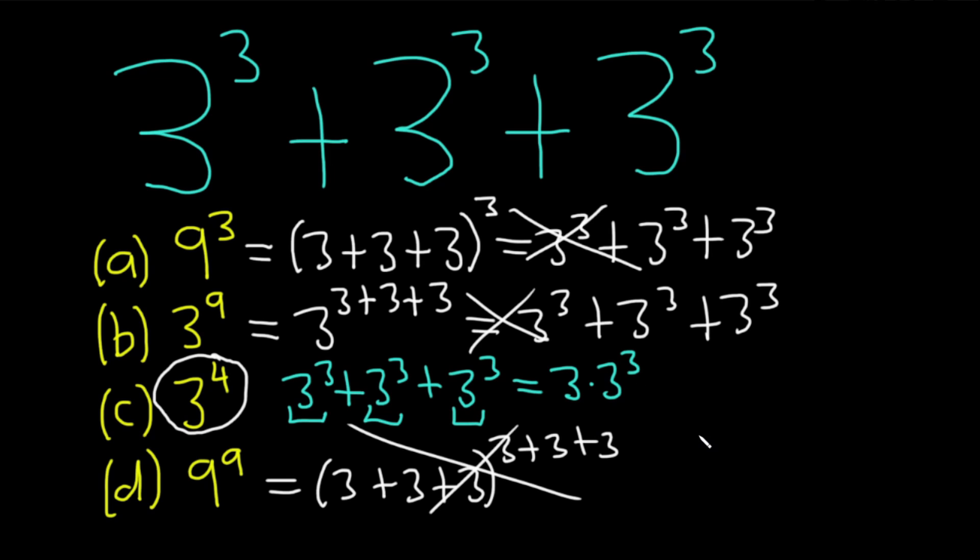And if that doesn't make sense, just think about it as x. If it was x plus x plus x, that's the same thing as 3x because there's three x's. So same thing here. It's 3 cubed plus 3 cubed plus 3 cubed. So there's three of them.